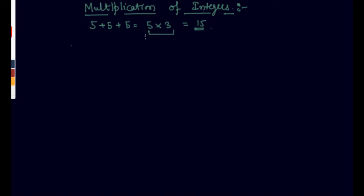In this lecture I will cover multiplication of a positive integer with a negative integer. So let's say if I write 5 multiplied by minus 8. What you will do is, as you know that 5 into 8 would be 40, and there is one negative sign here, so I will write a negative sign directly into my answer. So the result is negative 40.